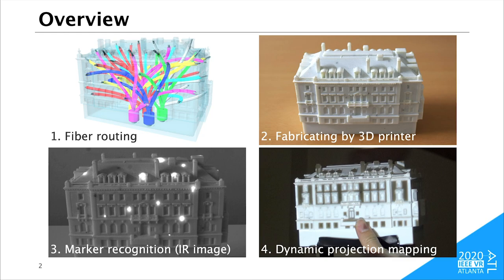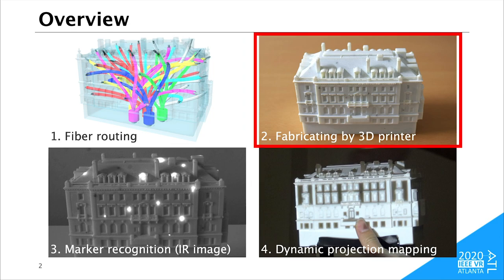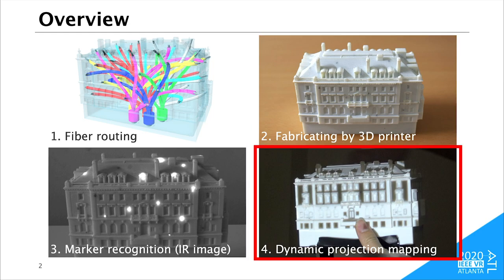First, we model a projection object. The most important parts of this process are marker placement and fiber routing. Then we fabricate the object by a multi-material 3D printer. The object's pose is estimated by the captured markers. And finally, we project a texture onto the surface according to the estimated pose.